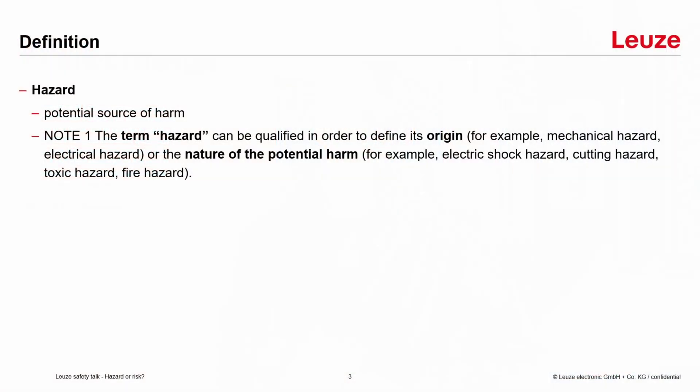At first we look into the hazard. So what is a hazard? By definition, a hazard is a potential source of harm. The term hazard can be qualified in order to define its origin — for example, a mechanical hazard where you can cut your fingers — or the nature of the potential harm, for example, electric shock hazard.